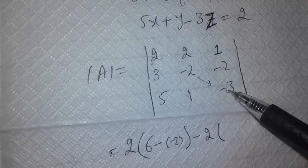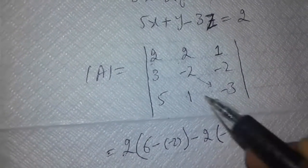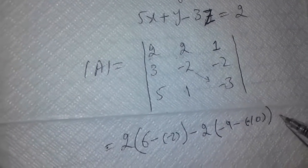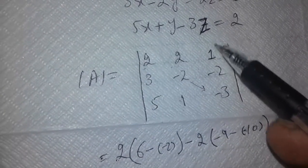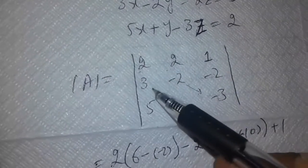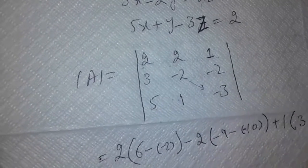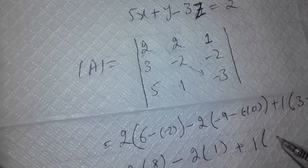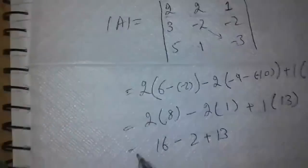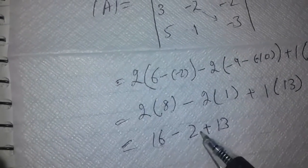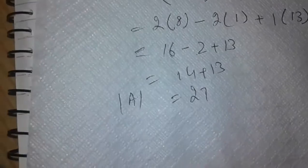For the second entry, the remaining four entries give us 3 times 3 equals 9, minus 5 times minus 2, giving minus 9 minus 10. For the third entry, we leave first row and third column; we multiply 3 by 1 and 5 by minus 2, getting 3 minus minus 10. After solving: 16 minus 2 plus 13 equals 27. So the determinant of all these equations is 27.